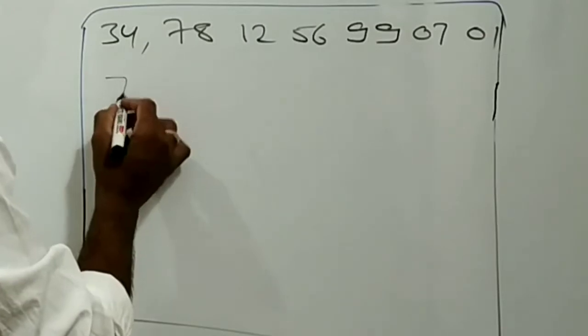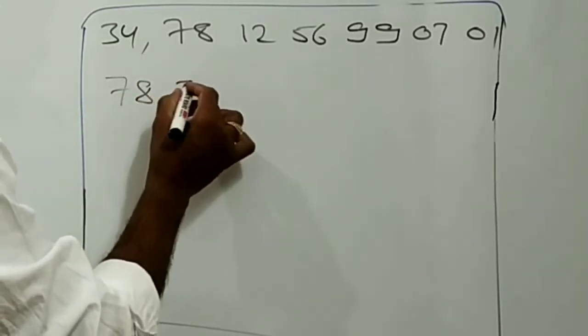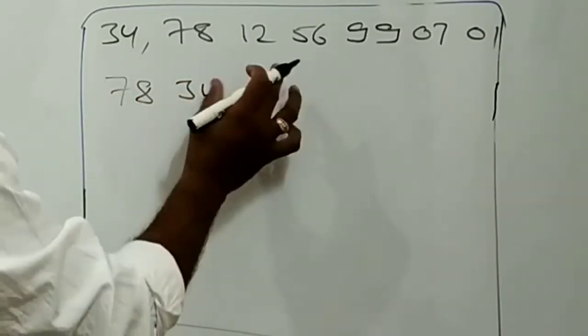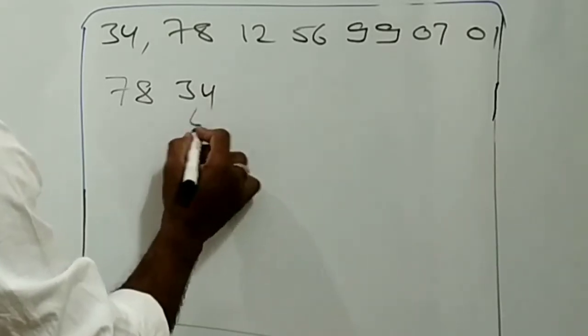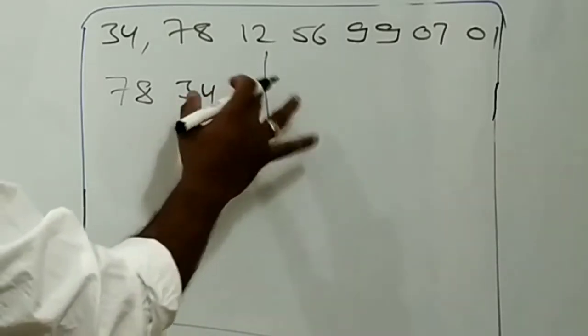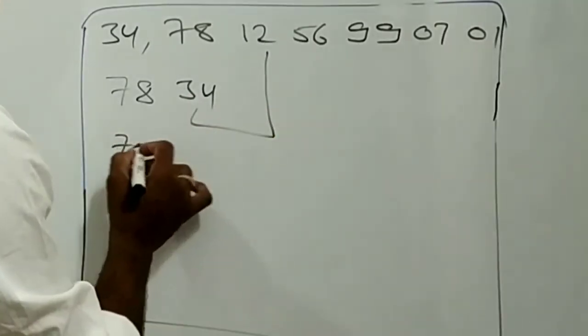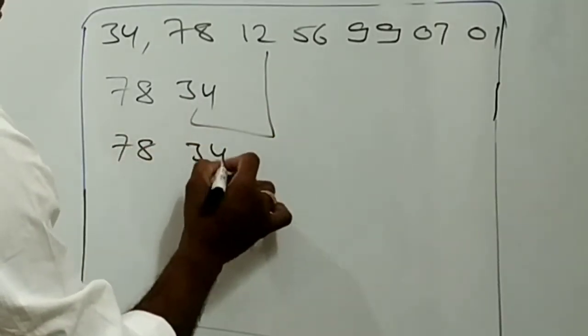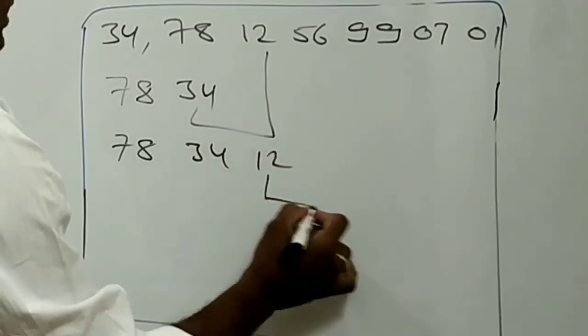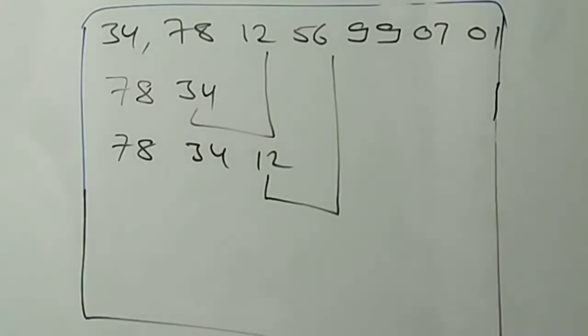So here in this case we need exchange. So first number will become 78, next will become 34. Now this 34 will be in comparison with the next number. They are in descending order, so I need not change. Now numbers will become 78, 34, 12.